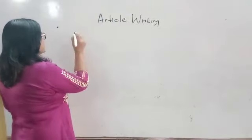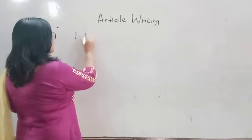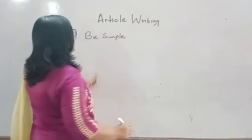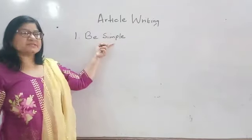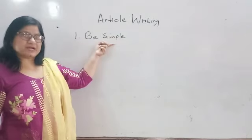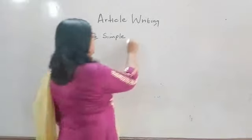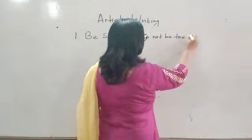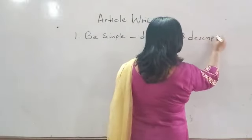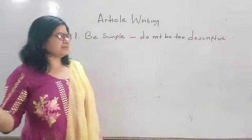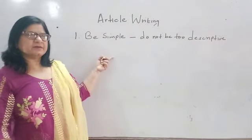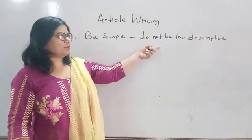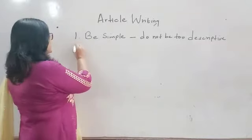Now I'll tell you how you can make your article writing impressive. Number one is be simple. Be simple means that you do not have to be too descriptive — don't simply go on writing. Keep that formula in mind, organize your thoughts, and you will find that you are not being too descriptive.